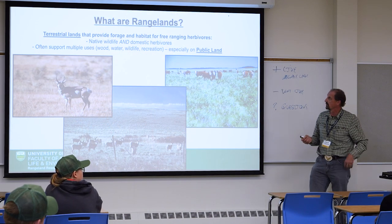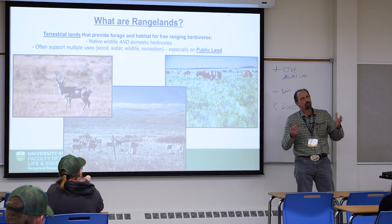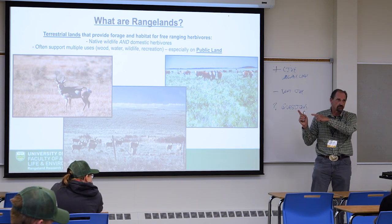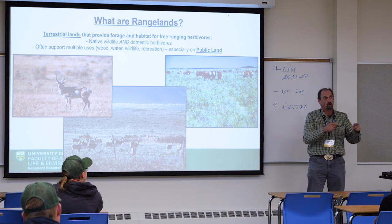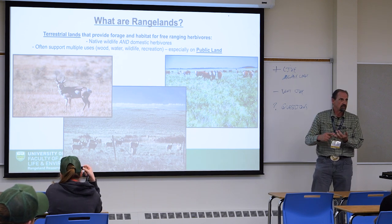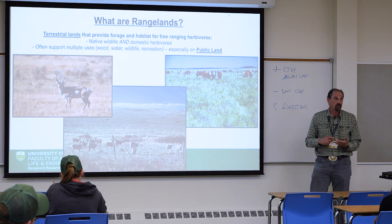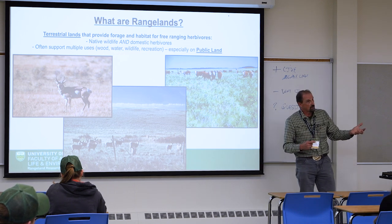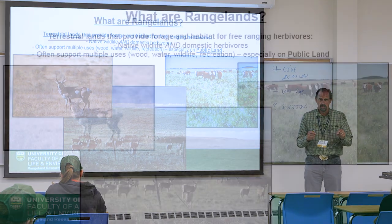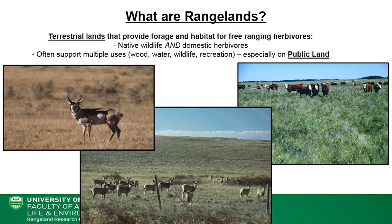Think of all the boreal forest, for example. Especially on public land, rangelands often provide multiple uses. We're not only concerned with forage and habitat — we're also interested in water storage, water purification, wildlife and biodiversity, and fiber production. That mandate is especially important on public land because it's not just about forage production, it's about meeting all kinds of other land uses. On private land it's a little different, because you have a single landowner responsible for decisions on that land base.